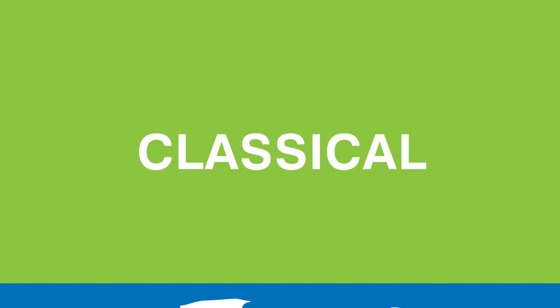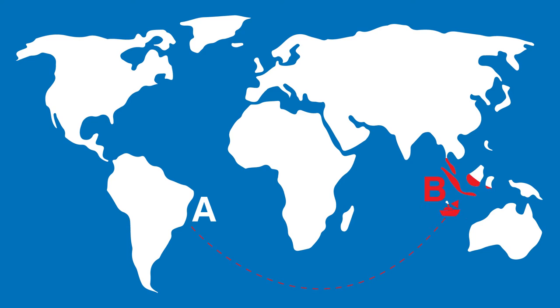The pest would have originated from country A. We go back to country A, we pick up the natural enemies from country A and bring them to country B where the pest is now residing.